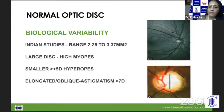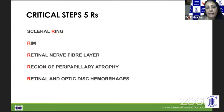It could be a smaller disc, and it gets smaller as hyperopia increases. It could also be an elongated, oblique, or tilted disc, which is more commonly seen in astigmats but could be seen in myopes too. So it becomes critical for us to look at the five R's: the scleral ring, the rim, the retinal nerve fiber layer, the region of peripapillary atrophy, and retinal and optic disc hemorrhages.